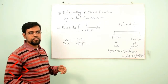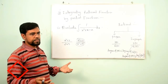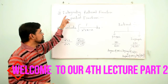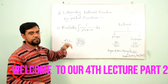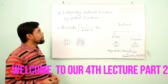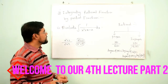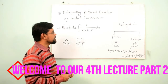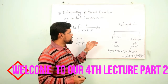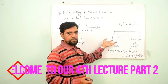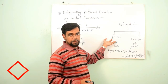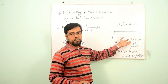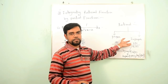Now let us try to use the partial fraction method in order to integrate a rational function. Here there are two types of rational function: the first one is proper rational function and the second one is improper rational function.